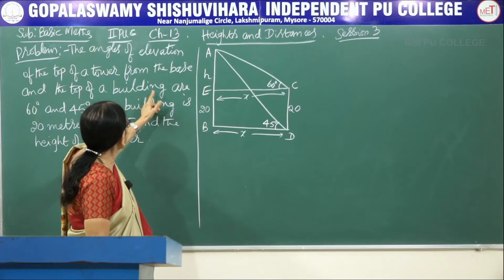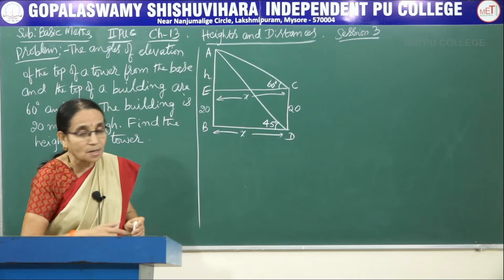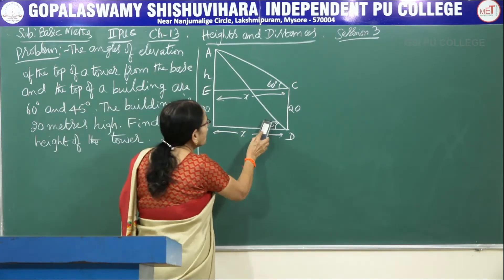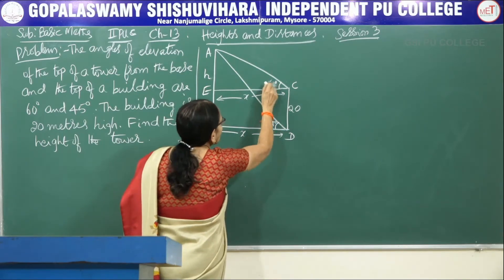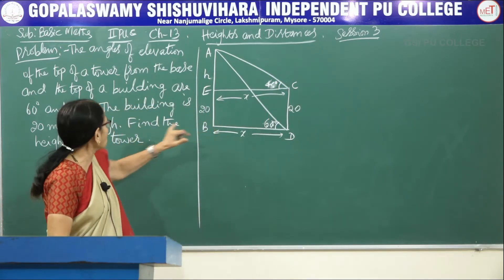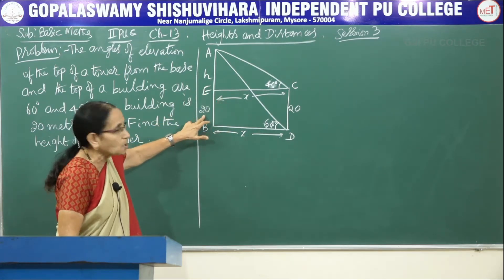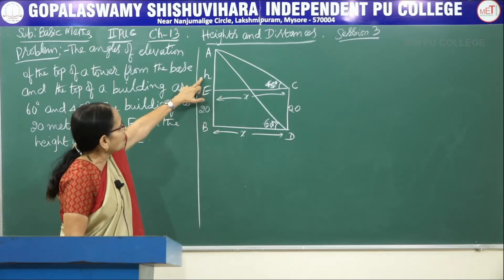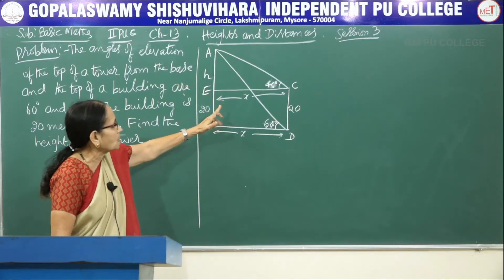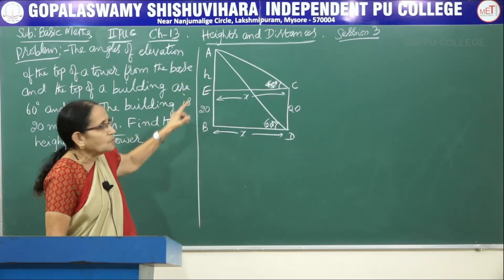The angles have been denoted as 60 degrees and 45 degrees. From the bottom the angle is 60 degrees and from the top it is 45 degrees. The height of the building, that is BE equal to CD, is also equal to 20. AE has been taken as H and BD which equals CE has been taken as X. The problem is to calculate H, then adding it to 20 we get the total height of the tower.